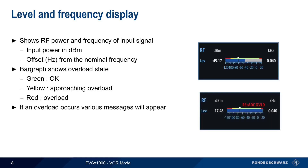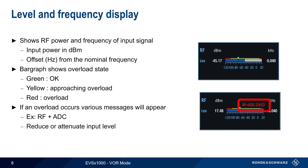If an overload condition does occur, different messages will appear depending on the type of overload — for example, both RF and ADC overloads. Regardless of the cause of the overload, the solution is to reduce or attenuate the input level, and this can be done by setting RF attenuation to either normal or low distortion. Please see the EVS1000 General Overview presentation for more details on configuring RF attenuation.